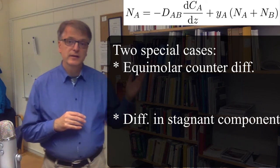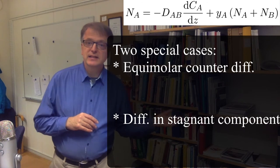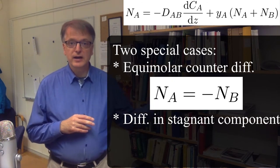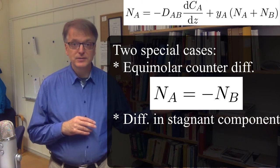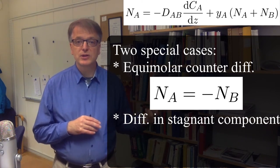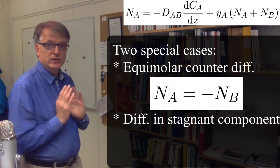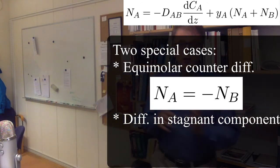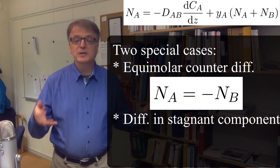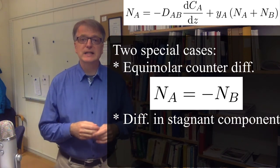One is if n-A equals exactly minus n-B, then the entire convective part disappears. And that's called equimolar counterdiffusion. As many molecules that move in this direction move in the other direction, so the net movement is zero, the net velocity is zero.